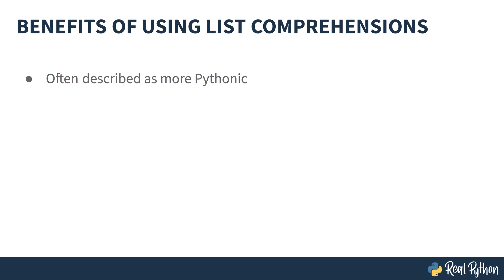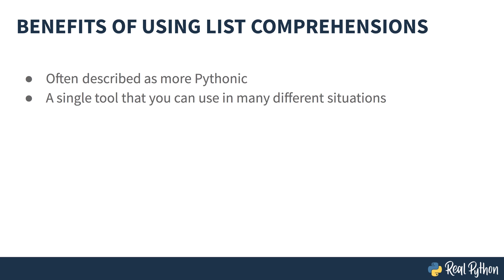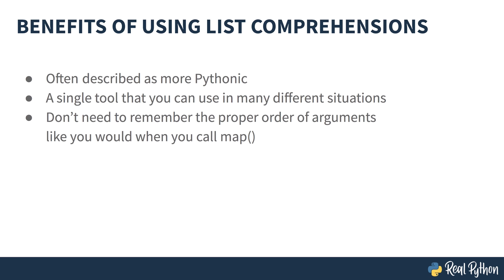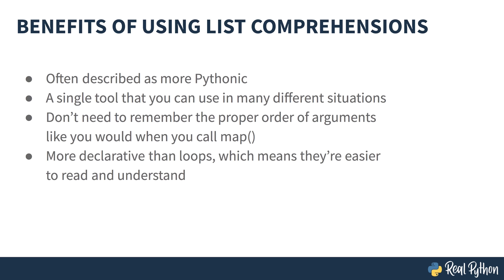List comprehensions are often described as being more Pythonic than loops or map. Rather than blindly accepting that assessment, it's worth understanding the benefits of using a list comprehension in Python when compared to the alternatives. Later on, you'll learn about a few scenarios where the alternatives are actually a better choice. One main benefit of using a list comprehension in Python is that it is a single tool you can use in many different situations. In addition to standard list creation, list comprehensions can also be used for mapping and filtering — you don't have to use a different approach for each scenario. This is the main reason why list comprehensions are considered Pythonic, as Python embraces simple, powerful tools you can use in a wide variety of situations.